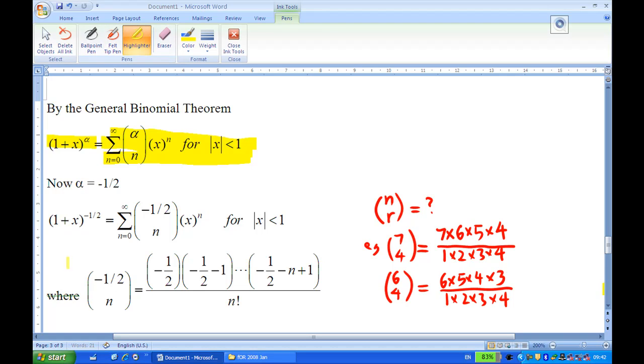In particular, if you want to find out what is minus half choose n, what you do now is start with minus half, then minus half minus 1, then minus half minus 2, all the way until minus half minus n plus 1, altogether n terms. Then divide by n factorial. Notice that there are n terms.